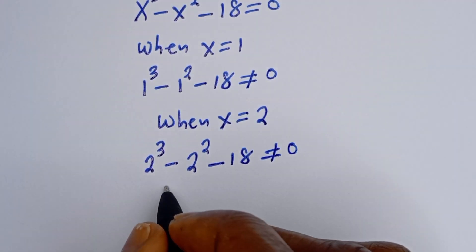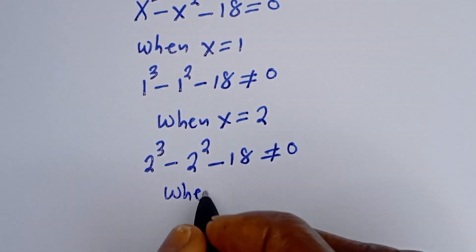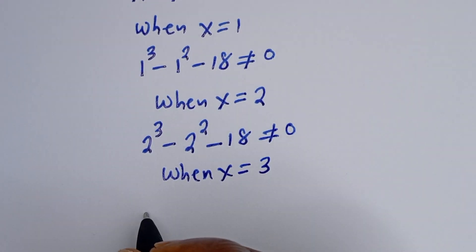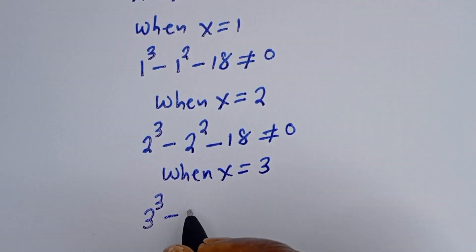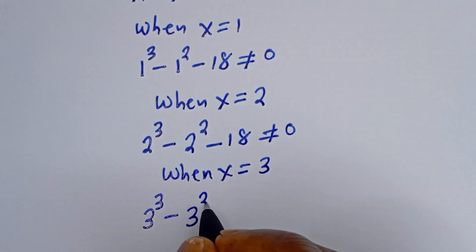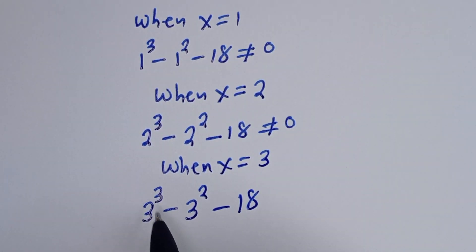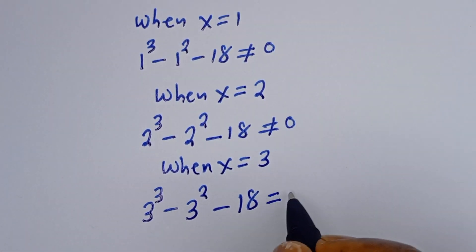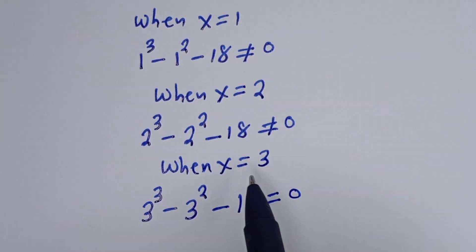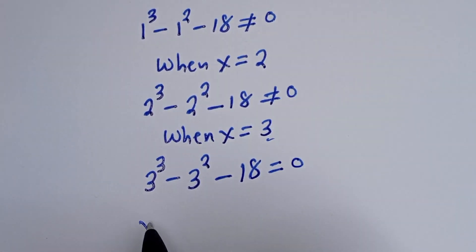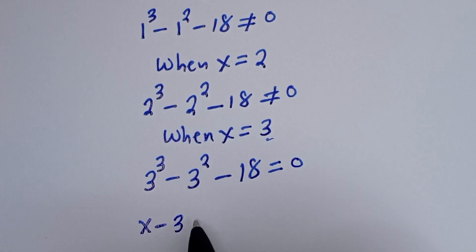Now let's check when s is equal to 3. We get 3 to the power of 3 minus 3 squared minus 18. That is 27 minus 9 minus 18, which is equal to 0. Therefore, one of the roots of this equation is s = 3, and (s minus 3) is a factor.